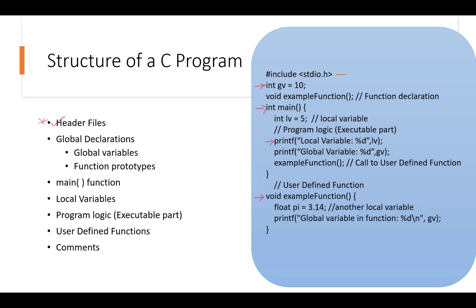Next are function prototypes. A prototype tells the system that it is going to encounter a function — it includes what kind of function it is, the return type, and what arguments it takes. As of now it might not make much sense, but a function prototype tells the system it will encounter a function at a later stage. Both global declarations and function prototypes are optional — you include them only if you're using global variables or user-defined functions.